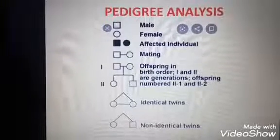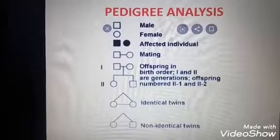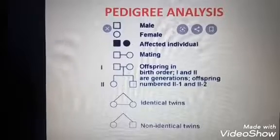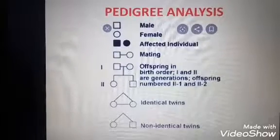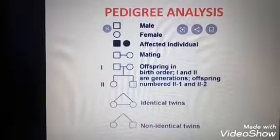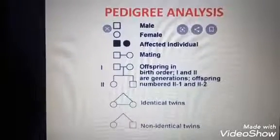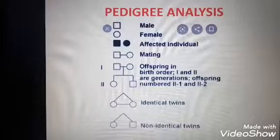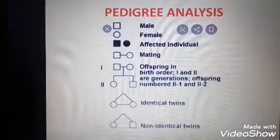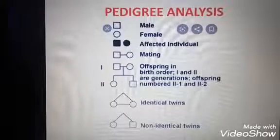For example, eye color, skin color, hair form, hair color, and other facial characteristics. Sometimes genetic disorders are also analyzed using pedigree analysis.